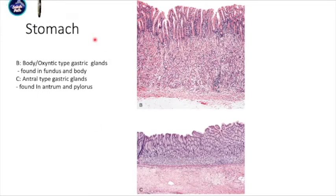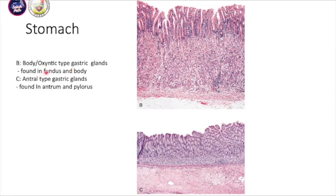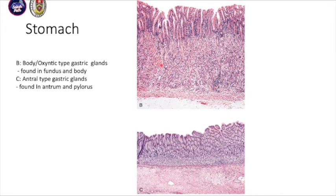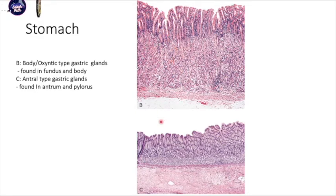Going more distally to the stomach, you have the body-type gastric gland, also called the oxyntic-type gastric gland, and the antral-type gastric gland. The body-type gastric gland is found in the fundus and the body. The difference is that you have parietal cells with pink eosinophilic cytoplasm, and this area is thickened compared to the antral-type gastric mucosa, where you have submucosal glands and chief cells.